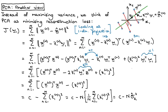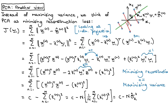So that shows that the two views of PCA — minimizing reconstruction loss and maximizing variance — are exactly the same. I find both views helpful in different situations, which is why it's important to know about both of them. They give the same results, and if you continue with these steps you will end up with the eigenvalue equations and the rest of the steps from the previous video.